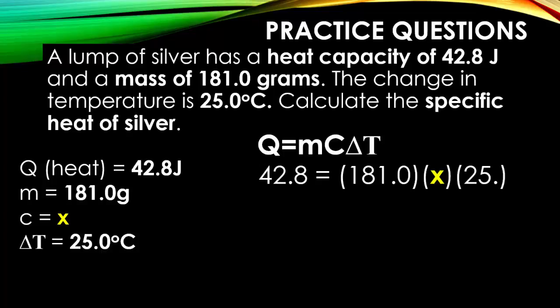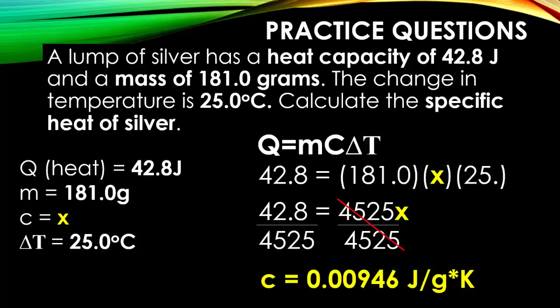Now plug in all the variables. Simplify the right hand side. Then you're going to be doing some division. So you're going to notice your specific heat capacity for silver is a very low value of 0.00946 joules per grams Kelvin.